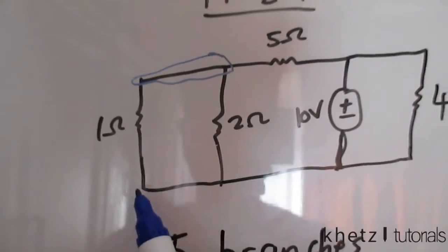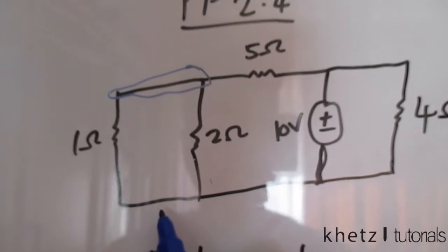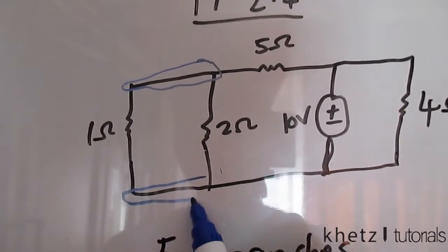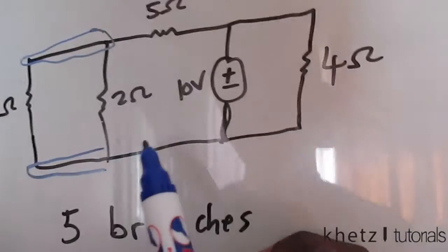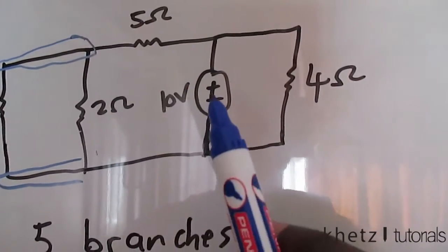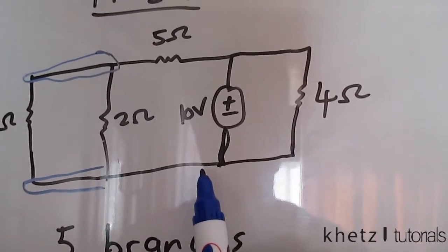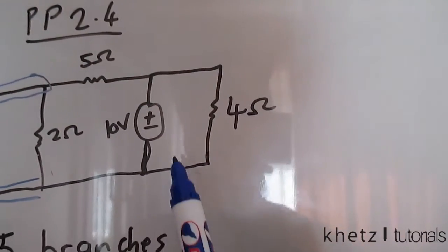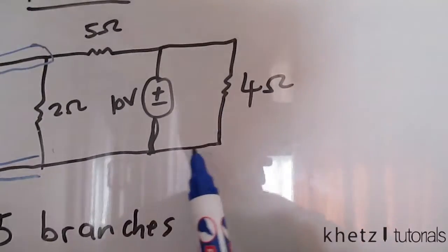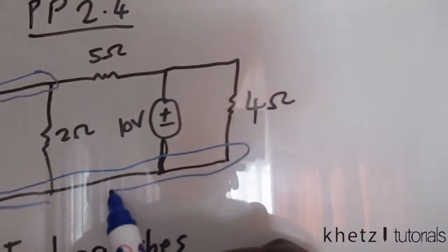If we look down here, the connection between this resistor and this resistor — there is no other branch in between, so that qualifies as a node. There's also a connection between this resistor and this voltage source with no other branch there, and even the connection between the voltage source and the resistor has no other branch, so this whole part forms a single node.